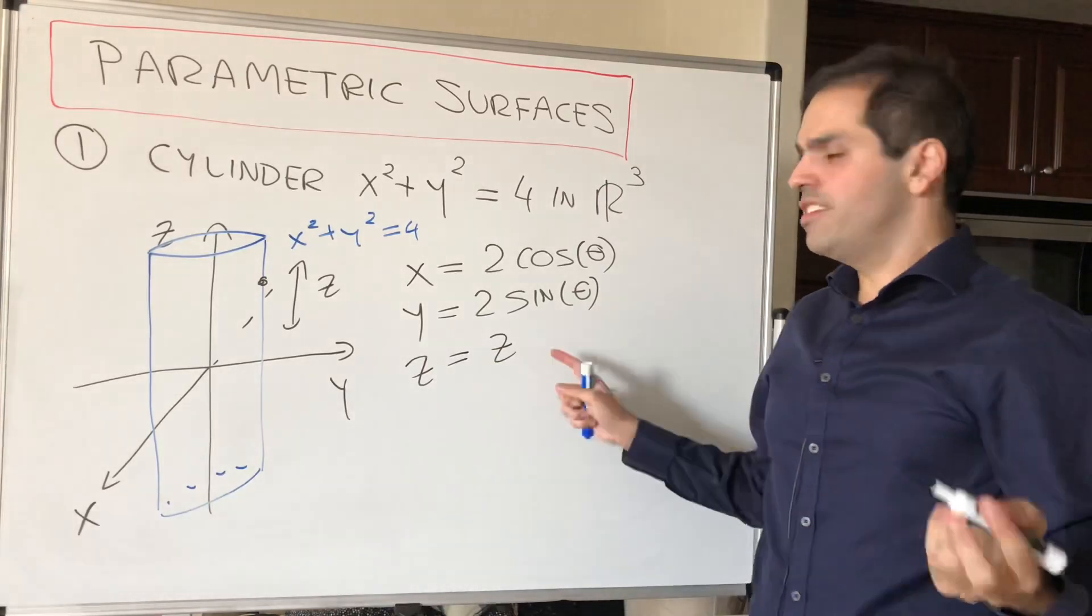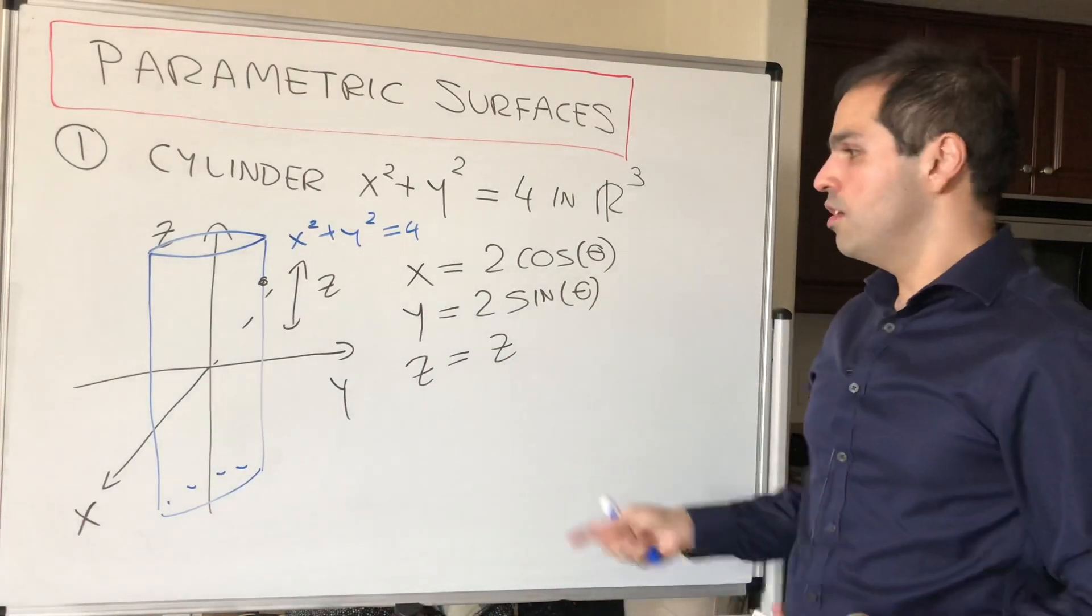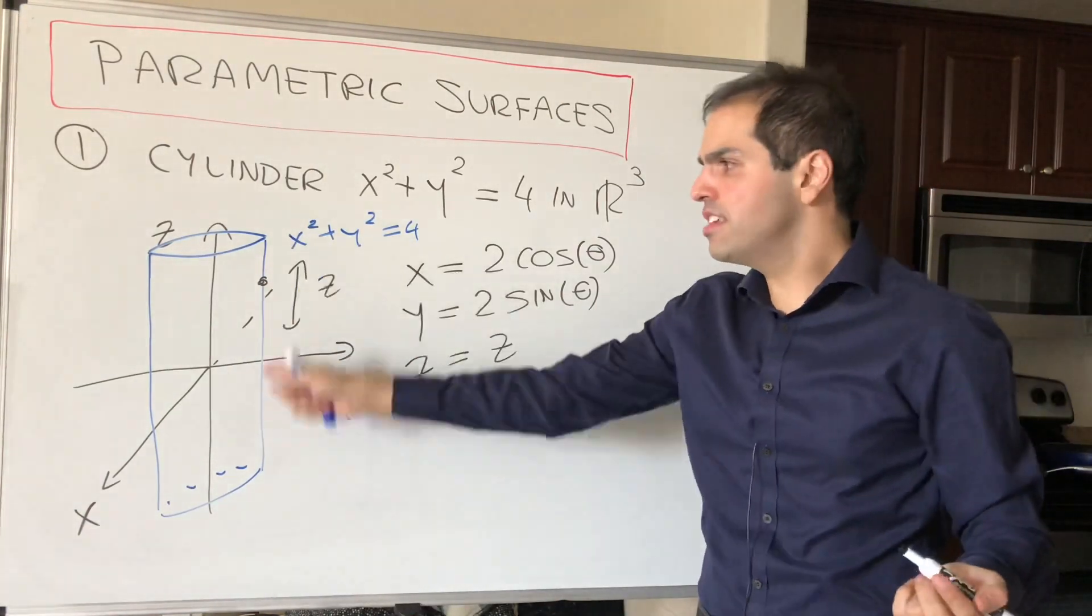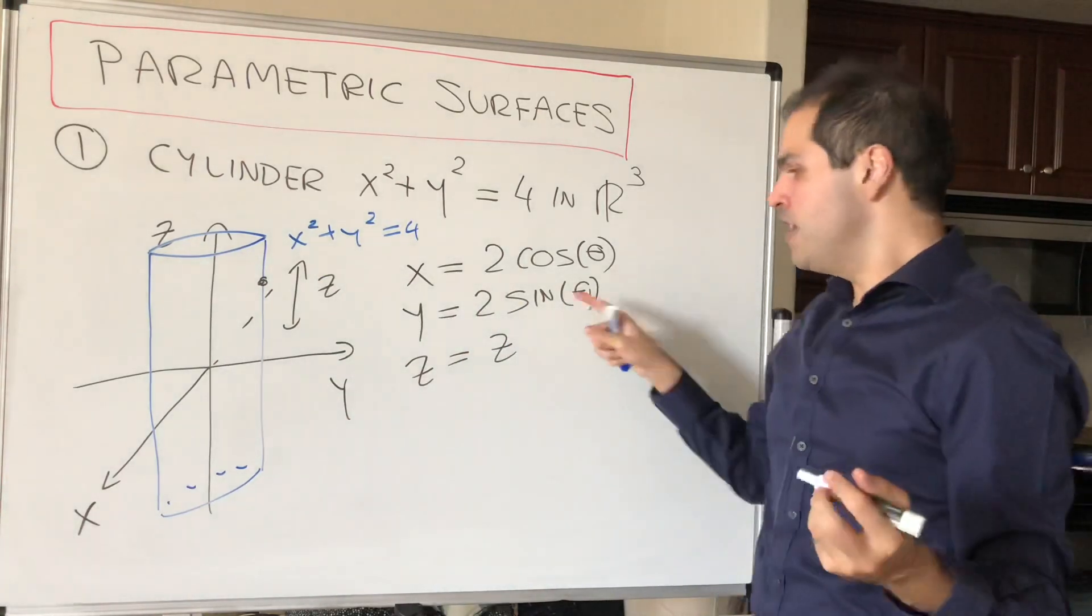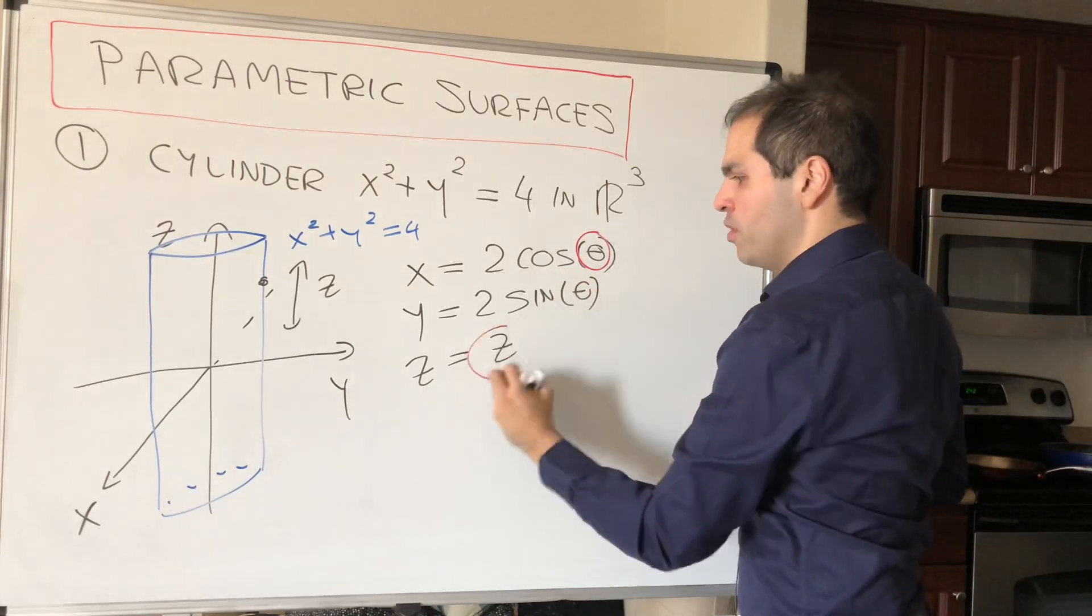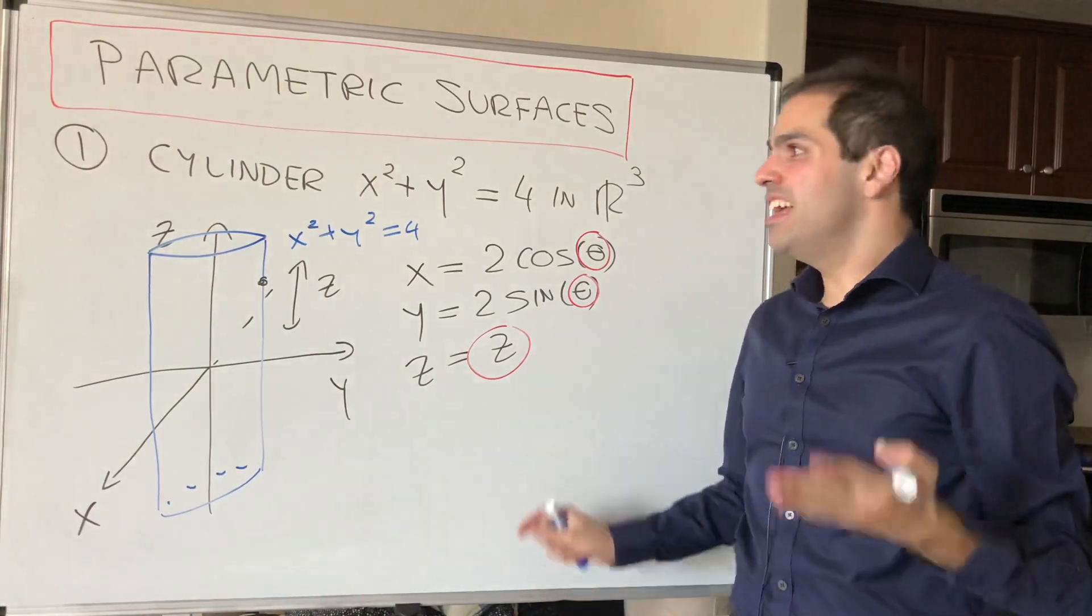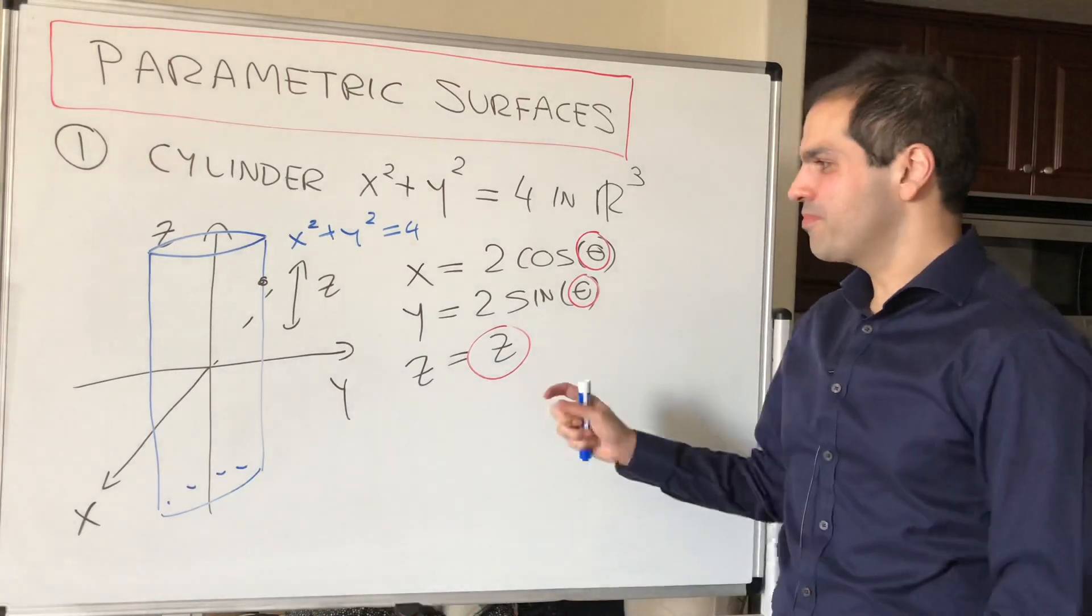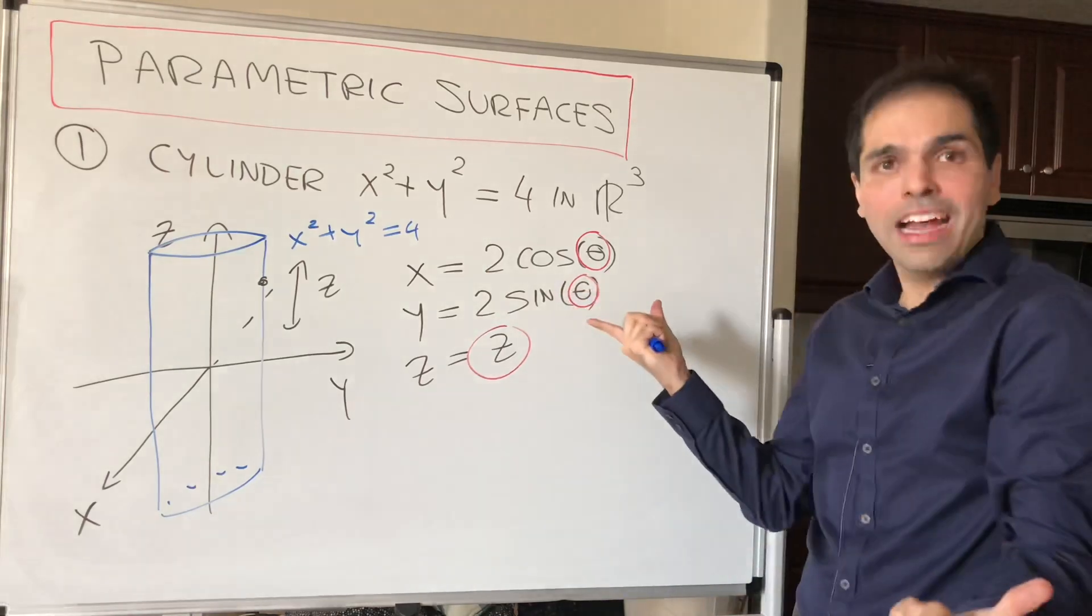Now it seems silly and it seems easy, but look what you're really doing by using cylindrical coordinates. It's just describing this cylinder with two variables, namely the variable theta and the variable z. And this is what a parametric surface is. It's just describing a surface using two variables.